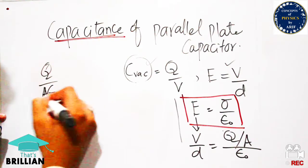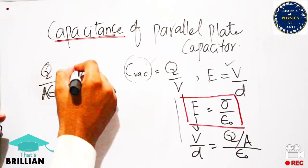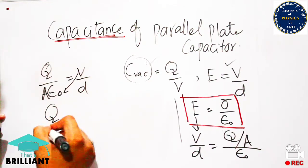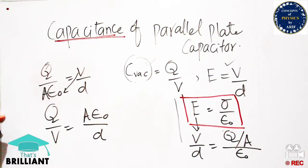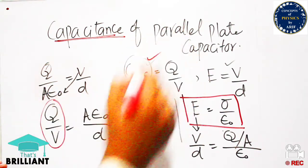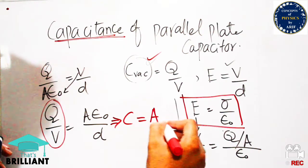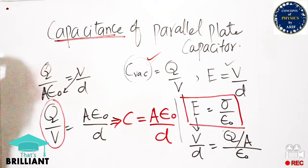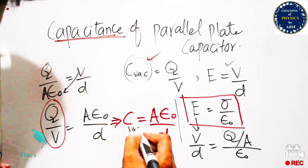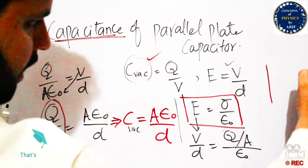Simplifying the expression: Q/A divided by ε₀ equals V/d. Rearranging, Q/V equals Aε₀/d. Since Q/V is capacitance, the final expression for the capacitance of a parallel plate capacitor in vacuum is C = Aε₀/d, where A is the plate area, ε₀ is the permittivity of free space, and d is the separation.